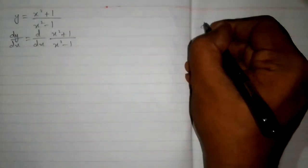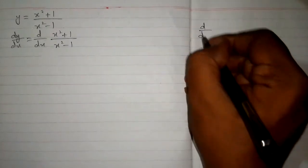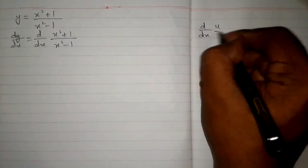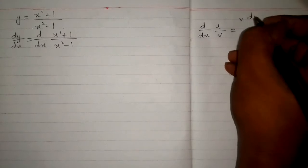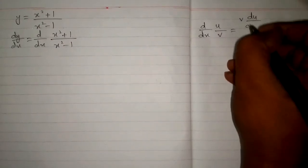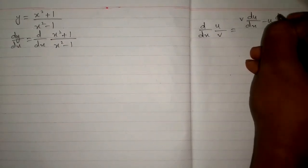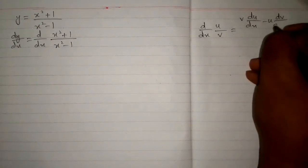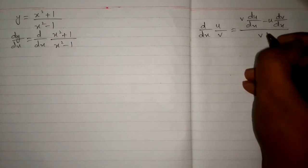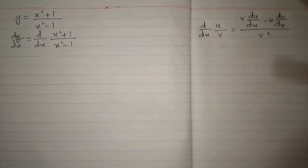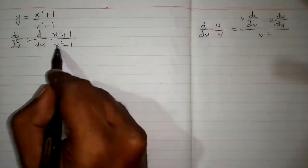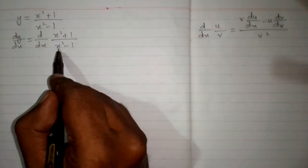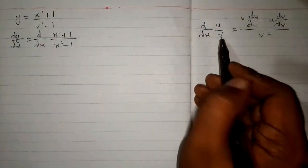Now we have a fraction so we will apply the quotient rule of differentiation, which is: the derivative of u upon v is v times derivative of u minus u times derivative of v upon v square. So we have x square plus 1 in place of u and x square minus 1 in place of v.